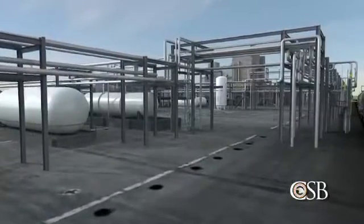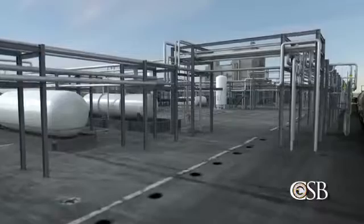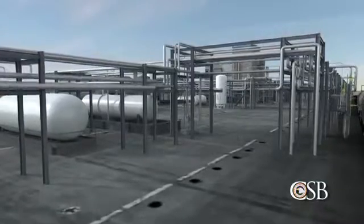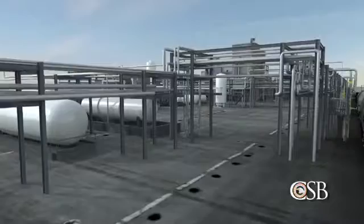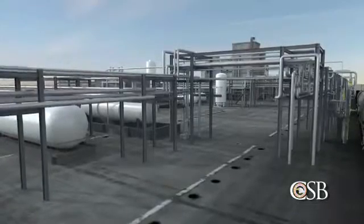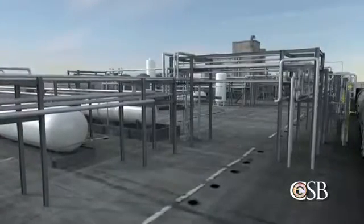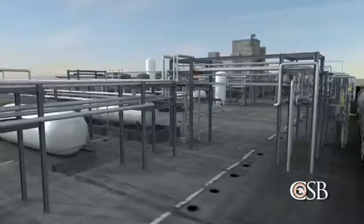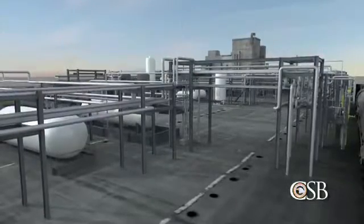The sequence of events that led to the incident at DuPont began on Monday, November 10, when the plant's lanate unit was shut down due to a problem with the reactor. Within that unit, methyl mercaptan reacts with other chemicals to create the insecticide lanate.